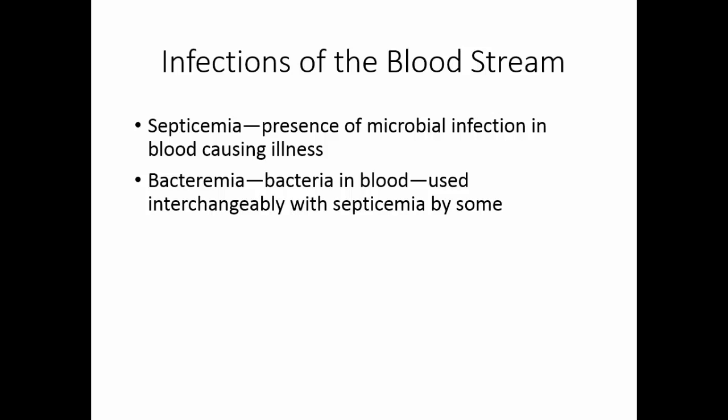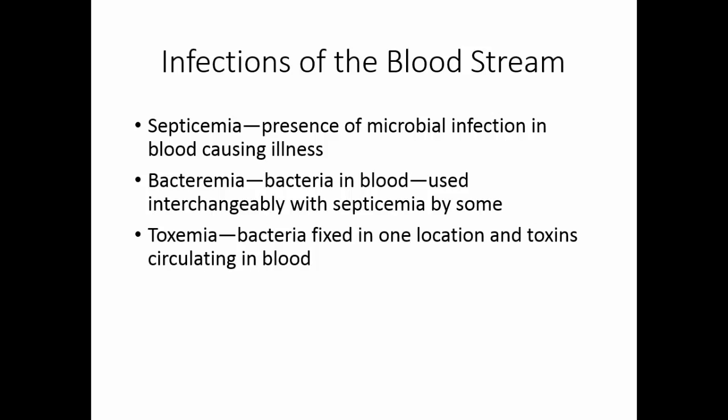Every time you brush your teeth, you put a few bacteria in your bloodstream. When you defecate or urinate, you may also put a few bacteria in your bloodstream. Your white blood cells immediately remove those bacteria and there is no problem. Toxemia occurs when there are toxins circulating in the blood. The bacteria producing the toxins can be in one location in the body and releasing those toxins to the bloodstream.